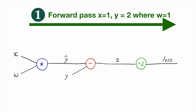We first apply the forward pass for given values: x is 1, y equals 2, and w is 1, as in our previous example. The forward pass is trivial — x is 1, w is 1, so the multiply gives 1. Then y is given as 2, so 1 minus 2 becomes minus 1, and then squaring gives 1. This is how we do the forward pass: just compute and memorize these values.